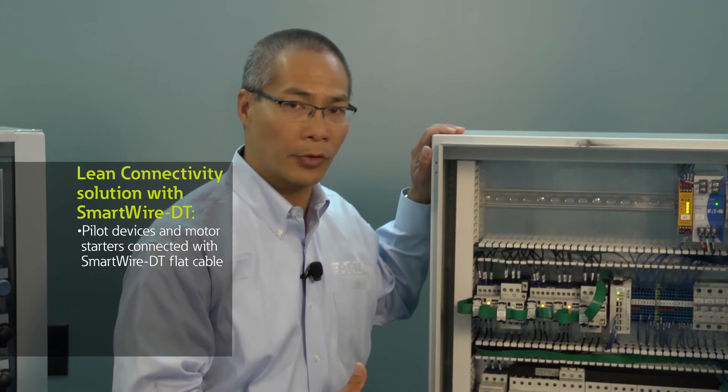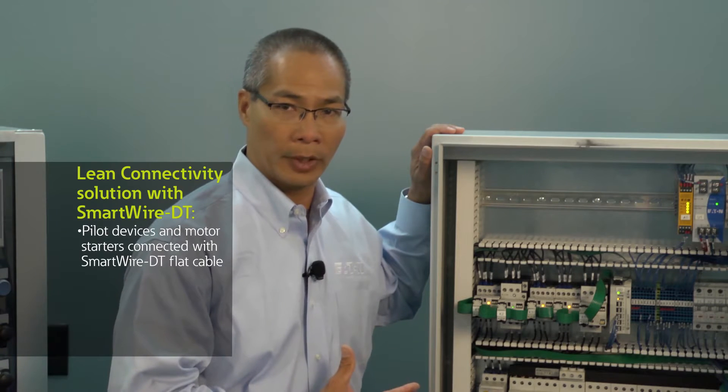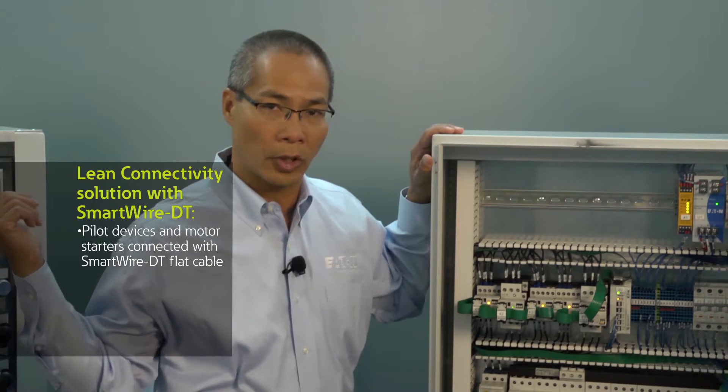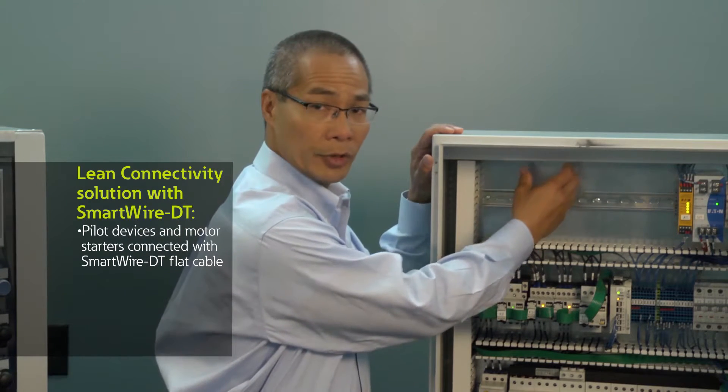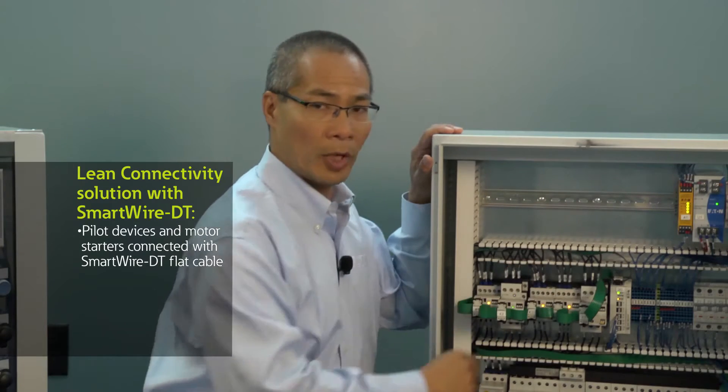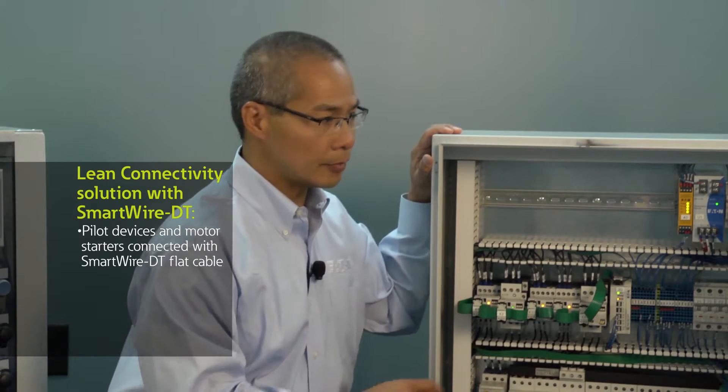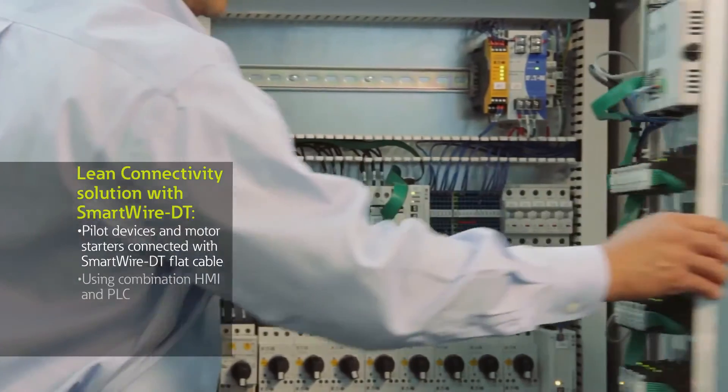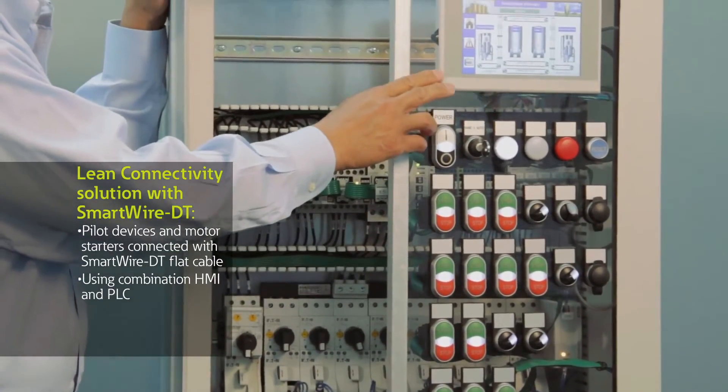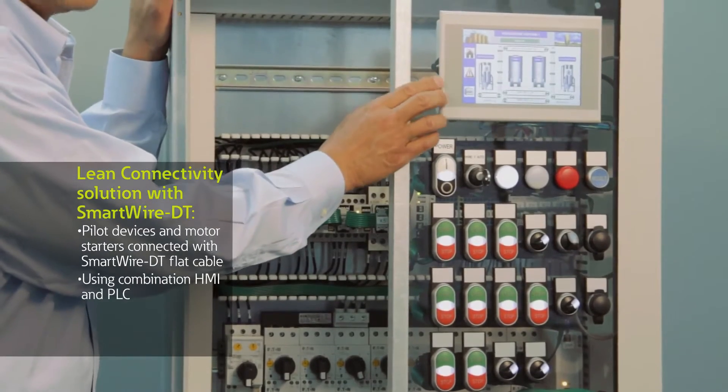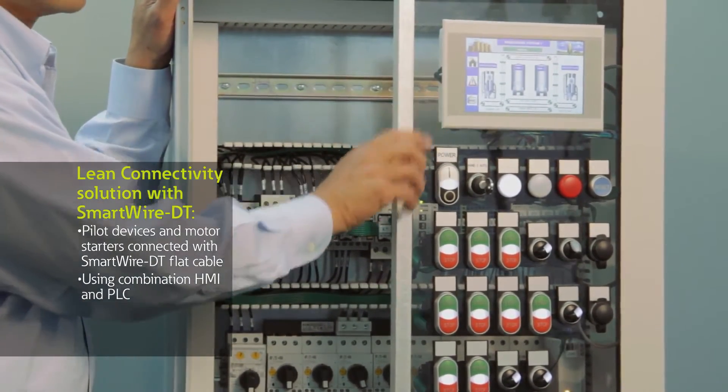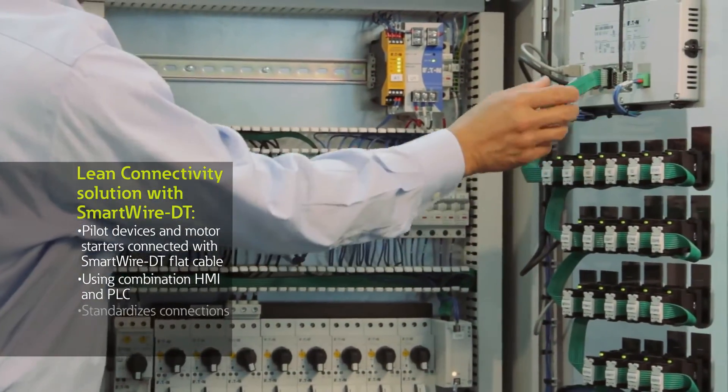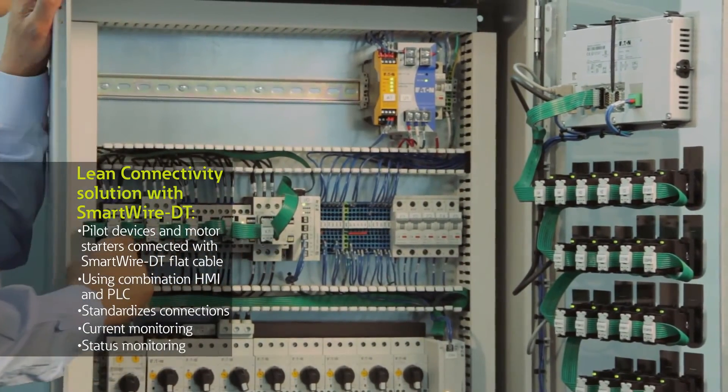SmartWire DT works with any third-party PLC through the use of what we call a gateway. For example, I could still have the same PLC CPU located here with an additional gateway solution wired to my flat green cable. In this instance, what I've done is actually included the PLC functionality inside my HMI PLC, so all the logic is being run from this particular unit. It's a combination PLC and HMI in one. In addition, the gateway to the SmartWire DT system is actually built in, so the flat cable can plug directly into the back of the HMI PLC.